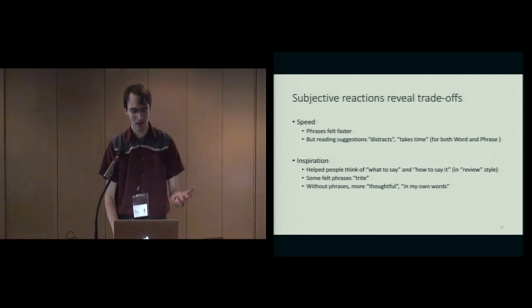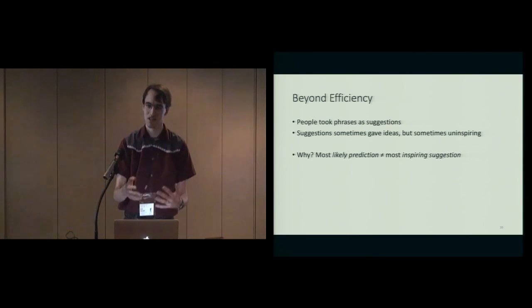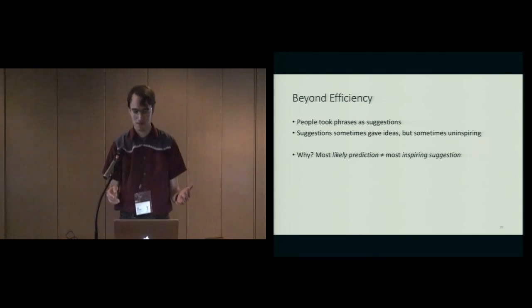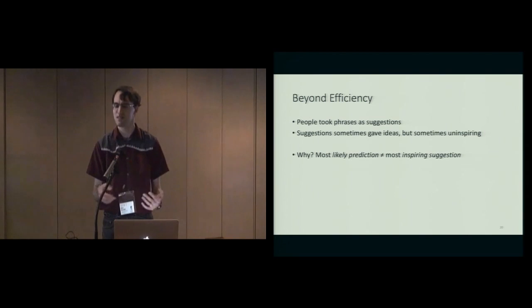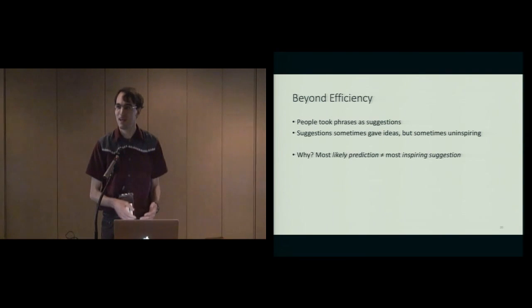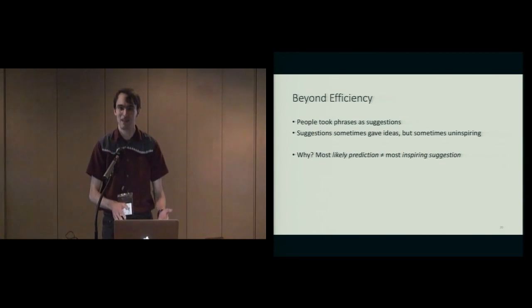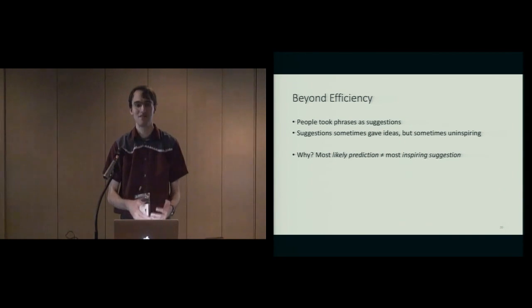All this is really pointing at that something more than efficiency is going on here. When you just see one word, people treat that as like a prediction—is the prediction right or not? But when you see a phrase, people are taking that as a suggestion. These suggestions are sometimes giving people ideas, but sometimes are also uninspiring. Now why would that be? I didn't talk much about how we generated stuff in the back end, but we tried really hard to generate phrases that were the most likely, the most accurate language model that we could get. But it turns out, almost by definition, what is the most likely is not necessarily what's the most inspiring.